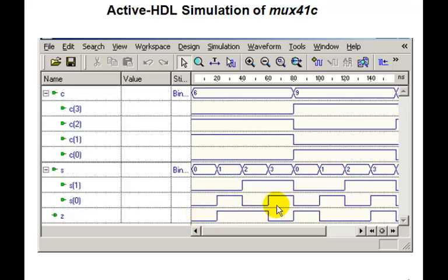And in all cases, if you look at this, it's exactly the same we had before. Z is going to be equal to C0 when S is 0, C1 when S is 1, C2 when S is 2, and C3 when S is 3.